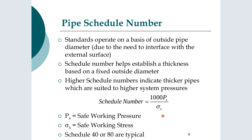Something you will often come across is a pipe schedule number. Two real examples like schedule 40 or 80 would be quite common. The schedule number is 1000 times the safe working pressure divided by the safe working stress, so it gives you a margin there. The higher schedule number indicates thicker pipes, which are suited to higher pressure systems. This schedule helps fix thickness based on a fixed standard across that, and you may typically use a different schedule number uniformly across the plant for certain processes.